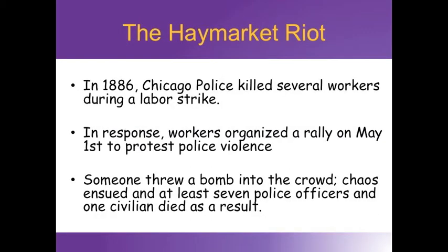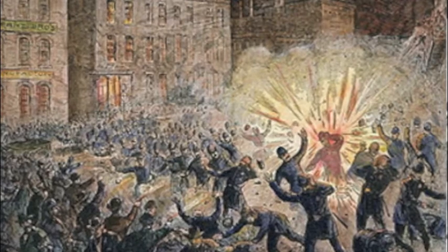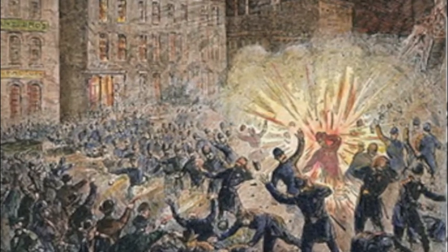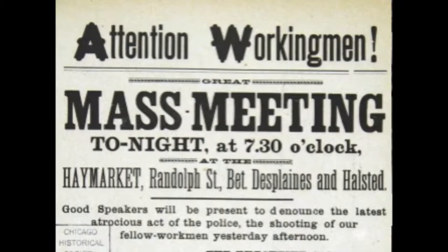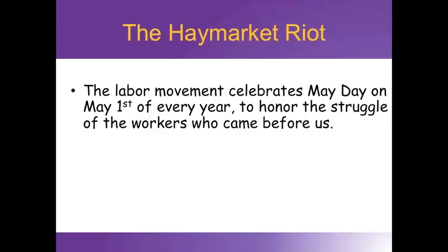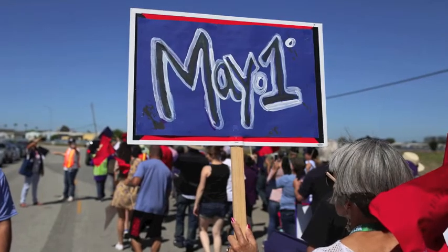In 1886, Chicago police killed and wounded several workers during a labor strike. In response, workers organized a rally on May 1, 1886, at Haymarket Square to protest the police violence. As the police arrived to disperse the crowd, someone threw a bomb at them, causing police and civilians alike to open fire. The ensuing chaos resulted in the deaths of seven police officers and at least one civilian. To honor the struggles of the early labor organizers, we celebrate the labor movement on May Day, May 1 of every year.